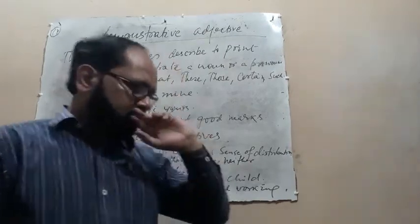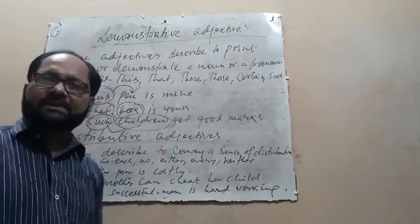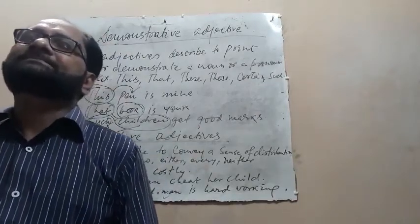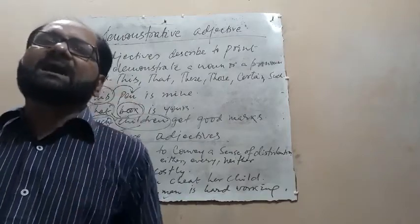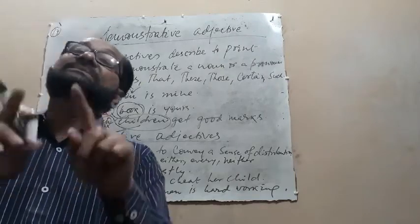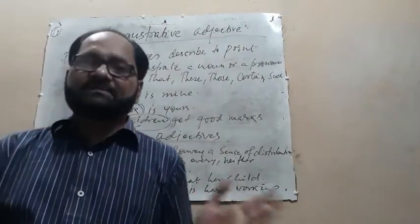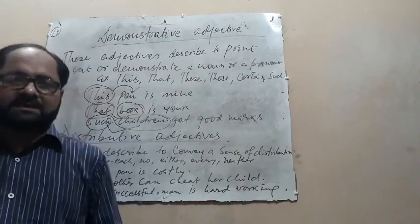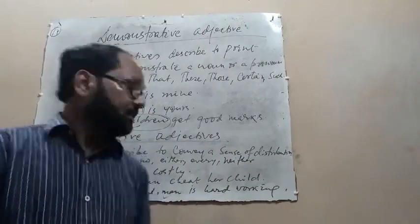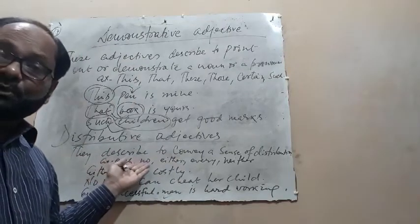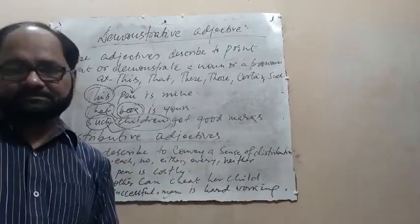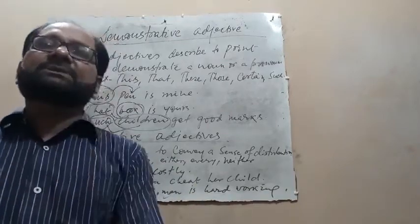The next kind of adjective is a distributive adjective. Distributive adjectives are the adjectives which convey a sense of distribution. For example, each, no, either, neither, every — all are examples of distributive adjectives.